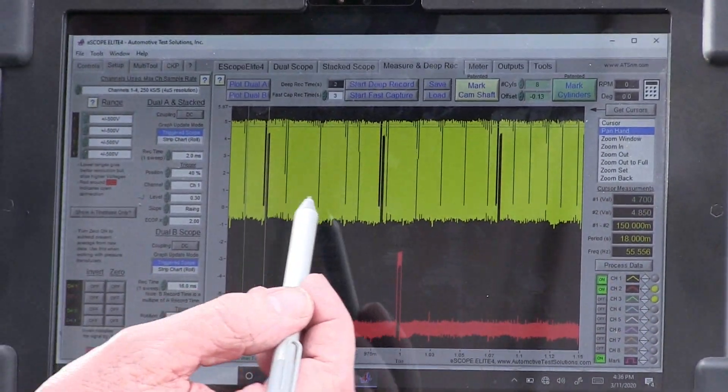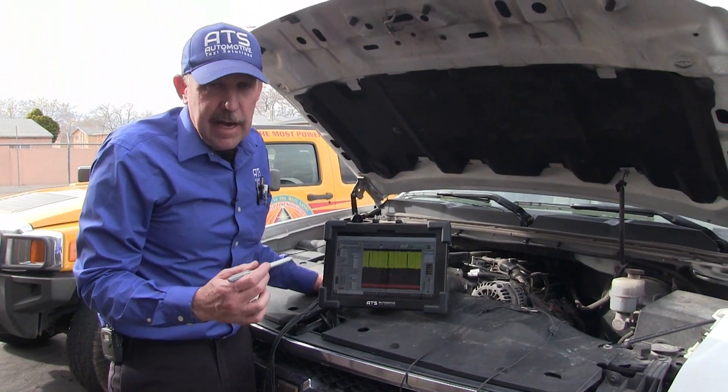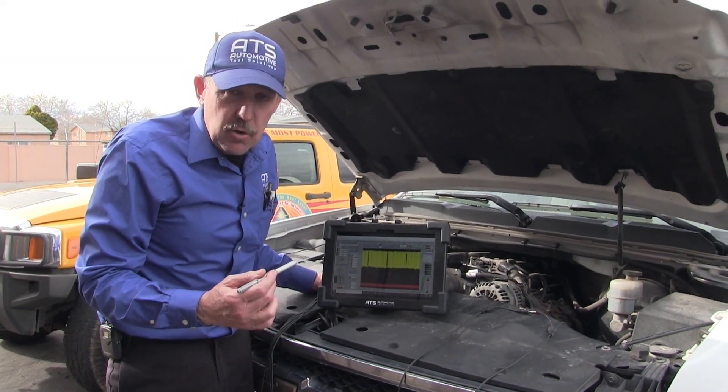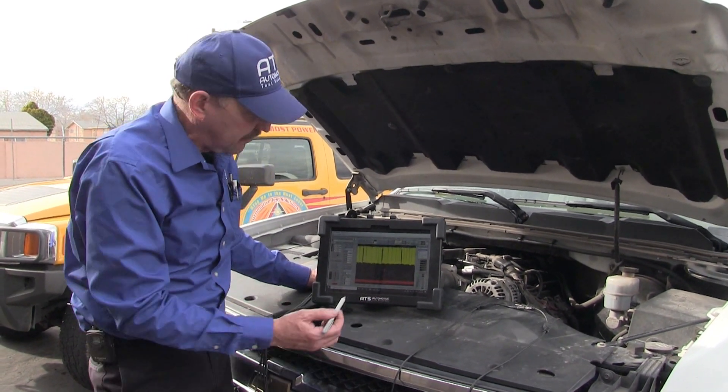Now in this crank sensor data, the crankshaft velocity changes will be in that data. And if the crank slowed down during a misfire and sped up when it's firing, we're going to be able to find that.